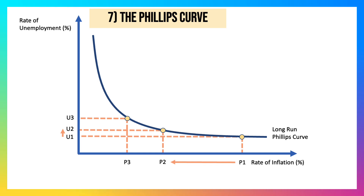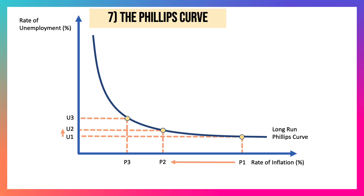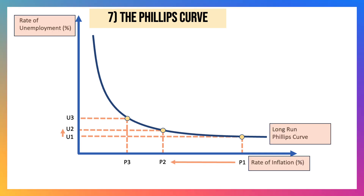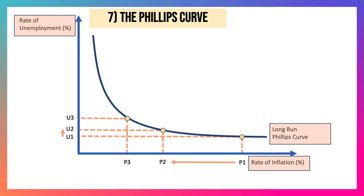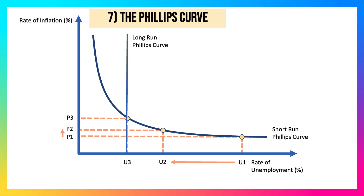Let's have a look at number seven, which is a macro diagram: the Phillips curve. There are three errors. Unemployment should be on the x-axis; inflation should be on the y-axis. And that is not the long-run Phillips curve — that is a short-run Phillips curve diagram. The correct explanation has the long-run Phillips curve at U3. If unemployment falls below U3, inflation starts to really accelerate — essentially, the natural rate has been reached.